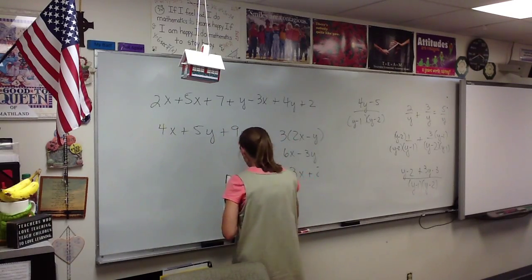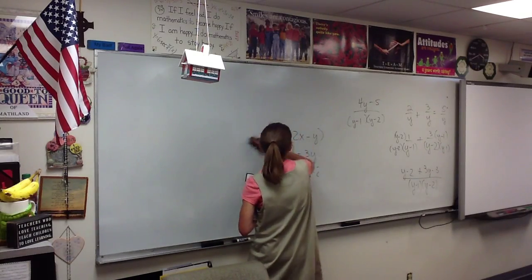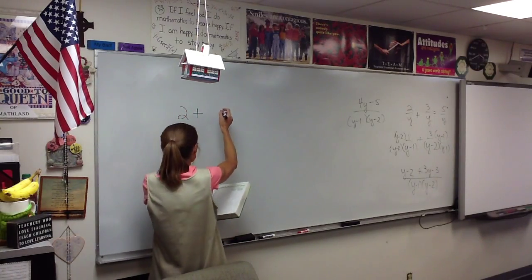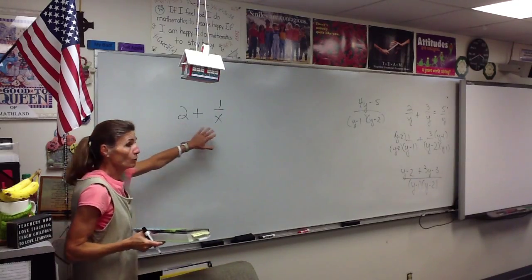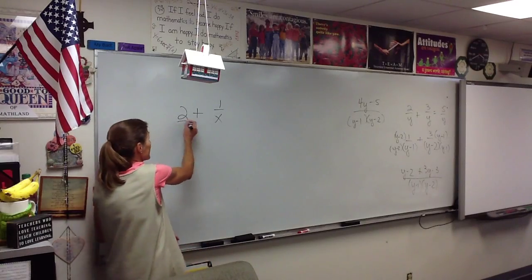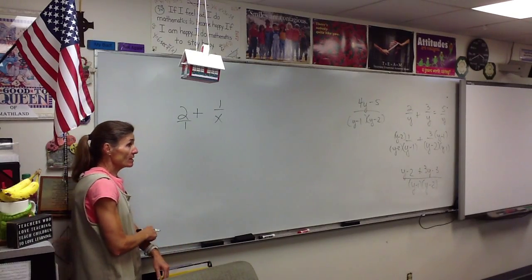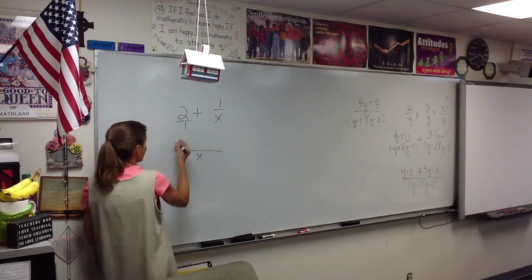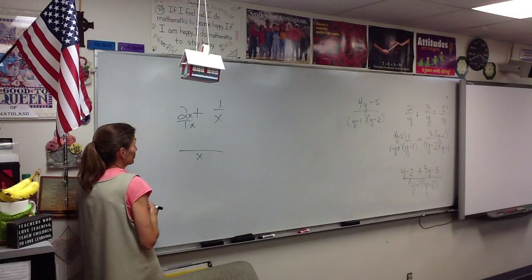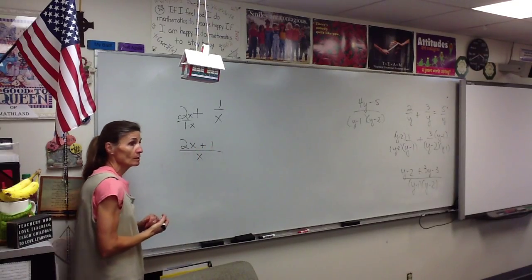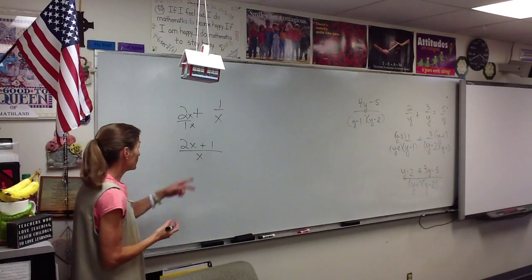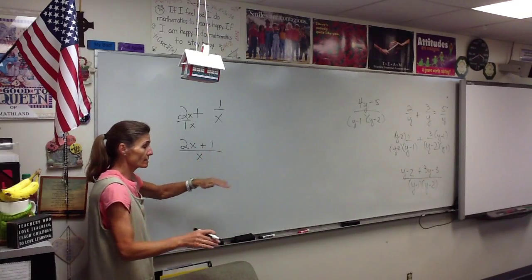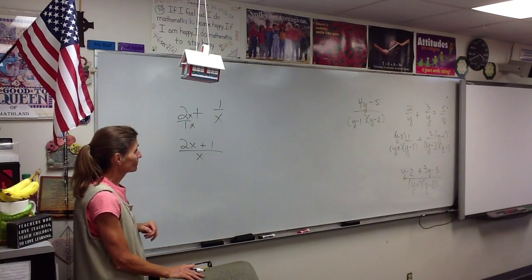We'll do one more of these. Number seven — how do you handle adding a whole number and a fraction? Think of this as a fraction and then get your common denominator. What would our common denominator be? x. This one already has an x; this one needs an x. So 2x plus 1 over x. Do we cancel these? No — never with a plus sign. If you had a plus or minus sign, we can't cancel.